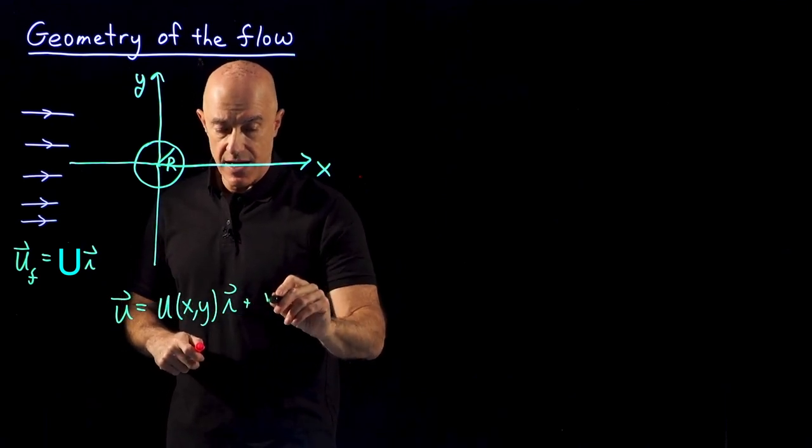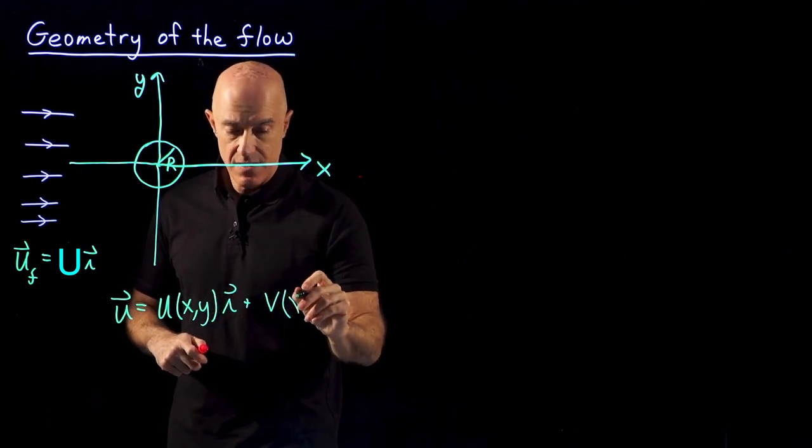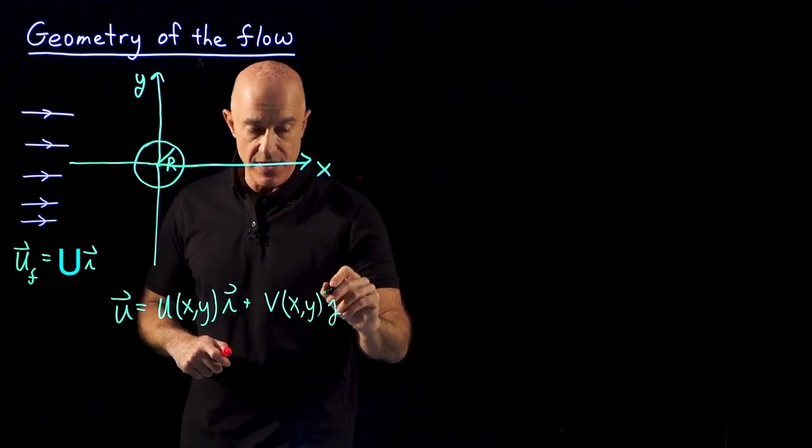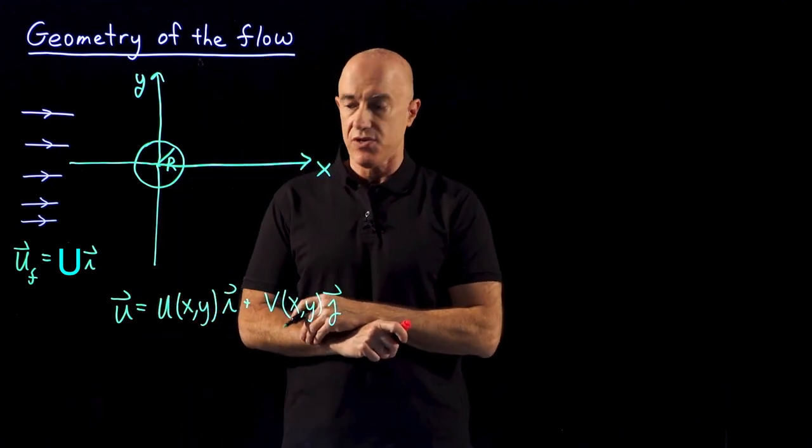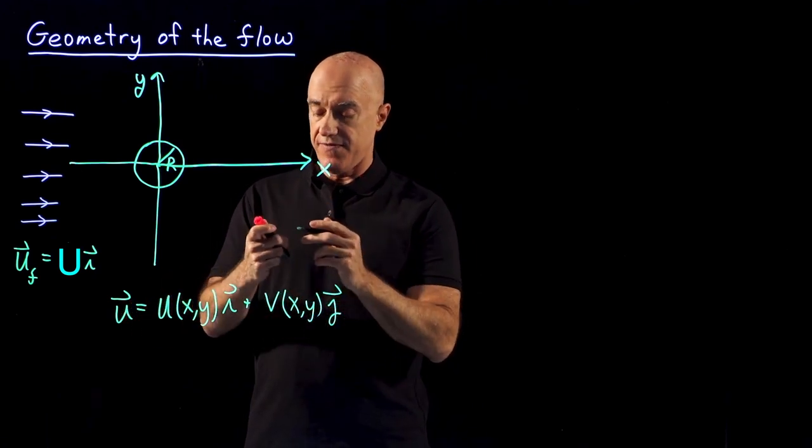Plus the velocity field in the y-direction we call v, which is a function of x and y, and that's in the y-direction. So j is the unit vector in the y-direction. So this is our velocity field.